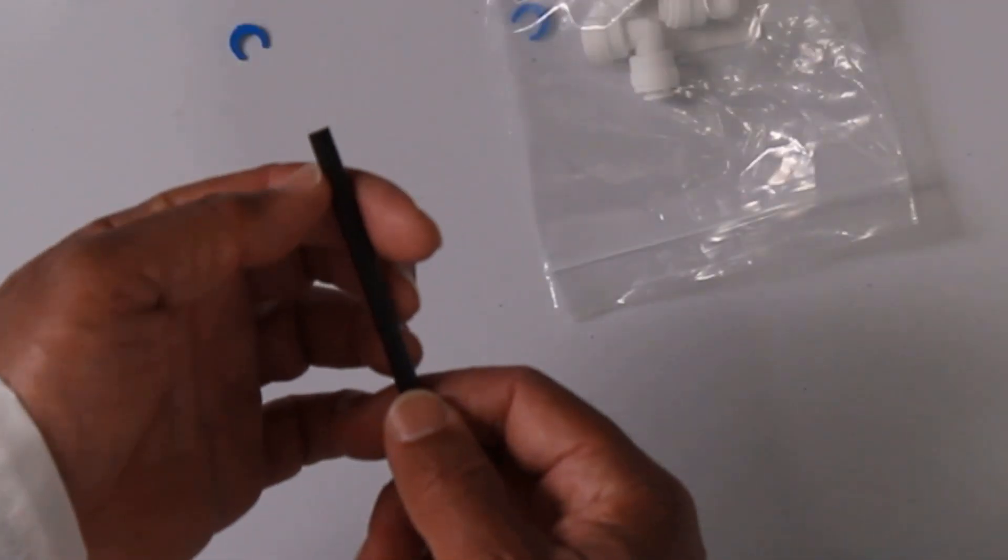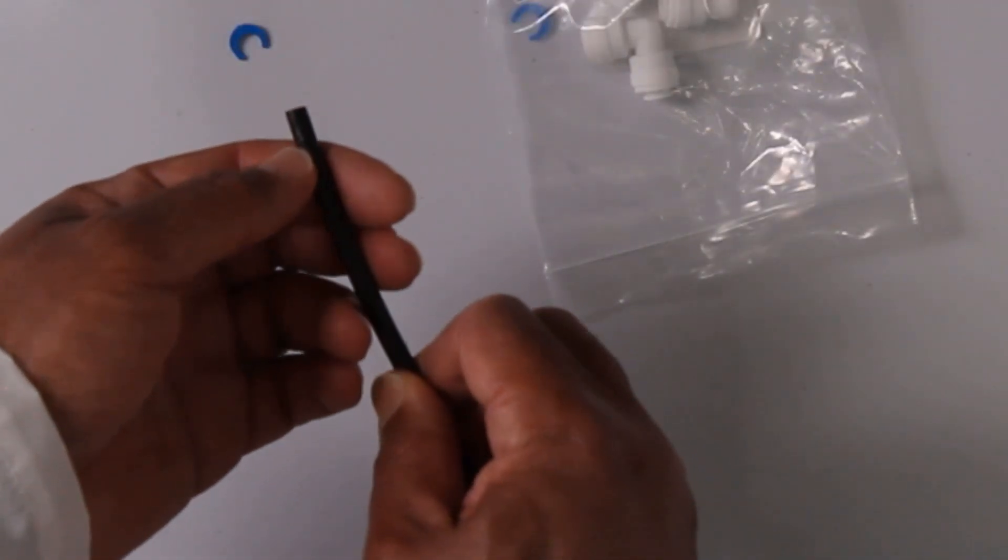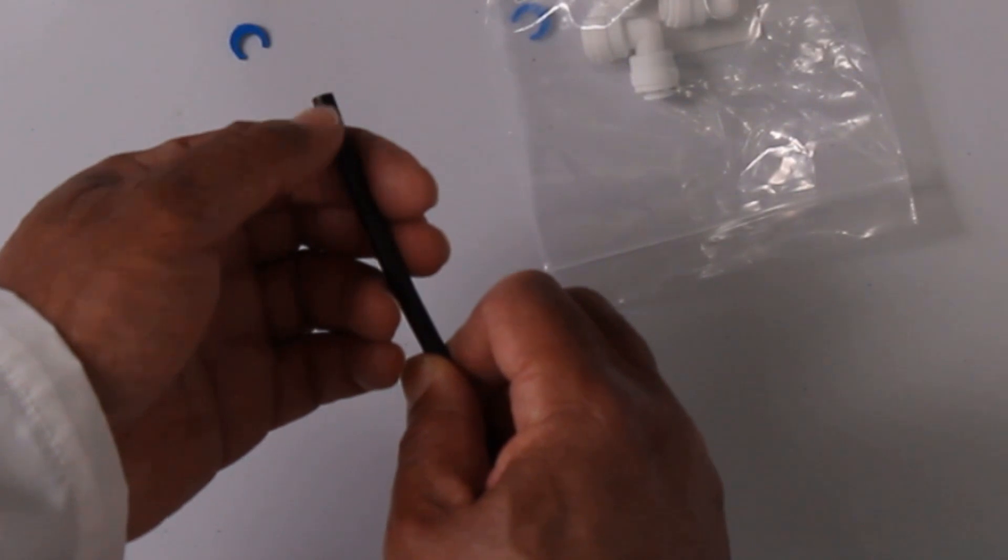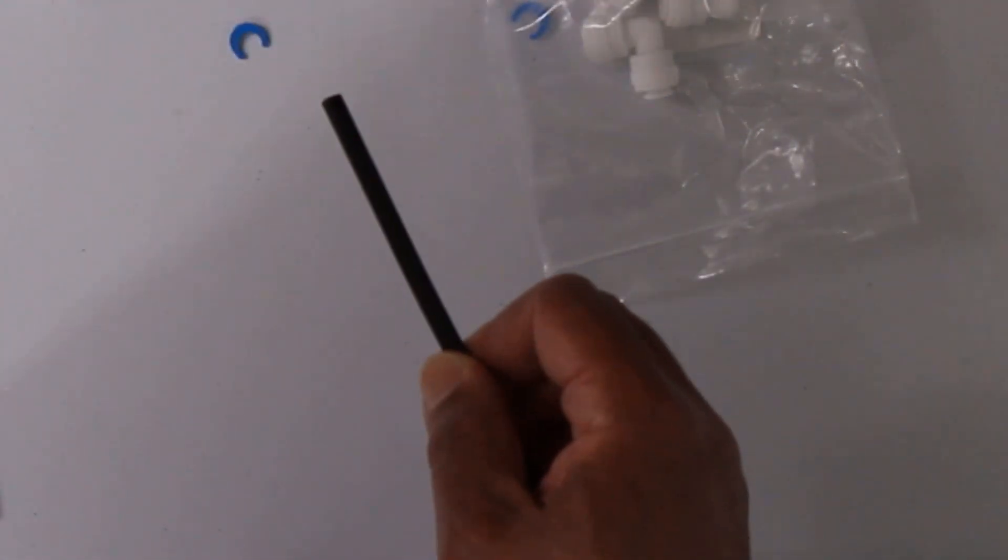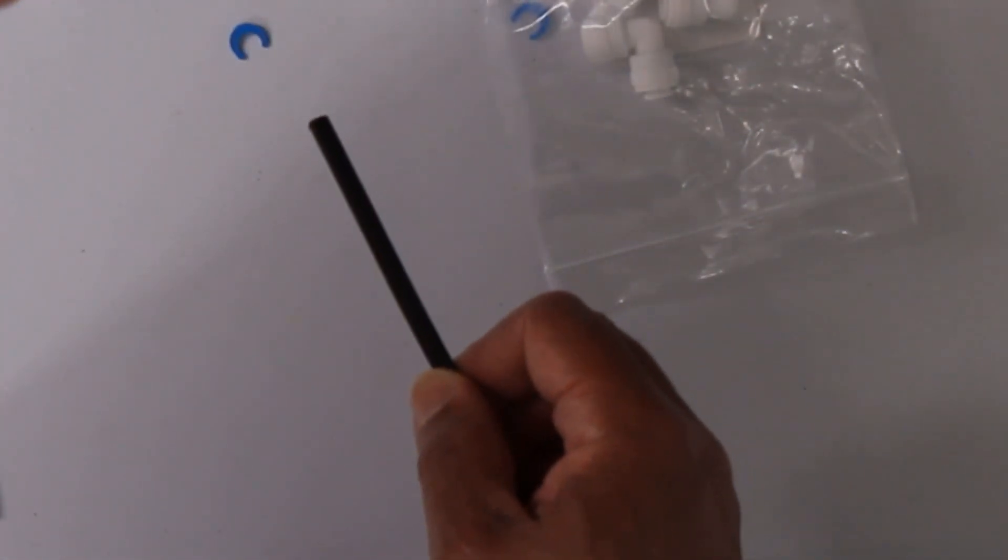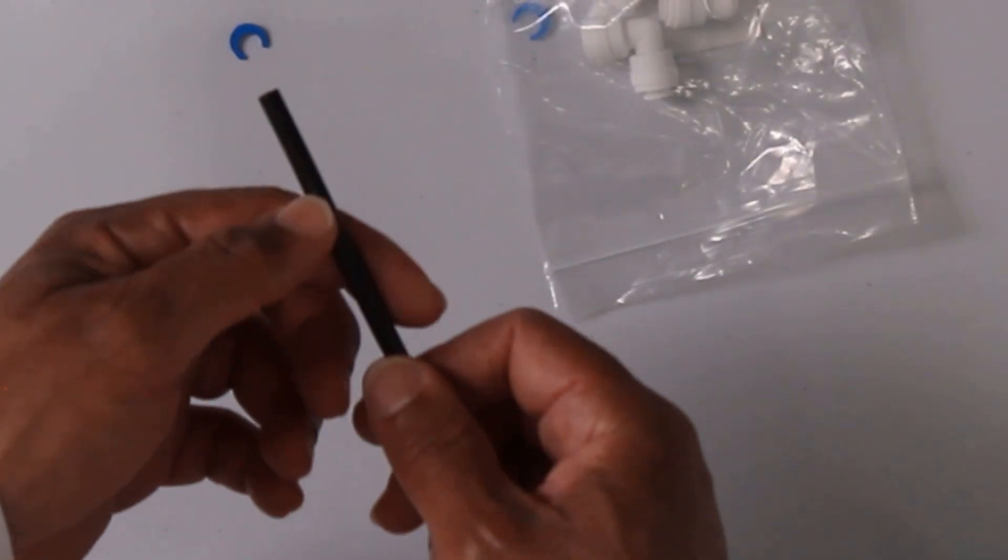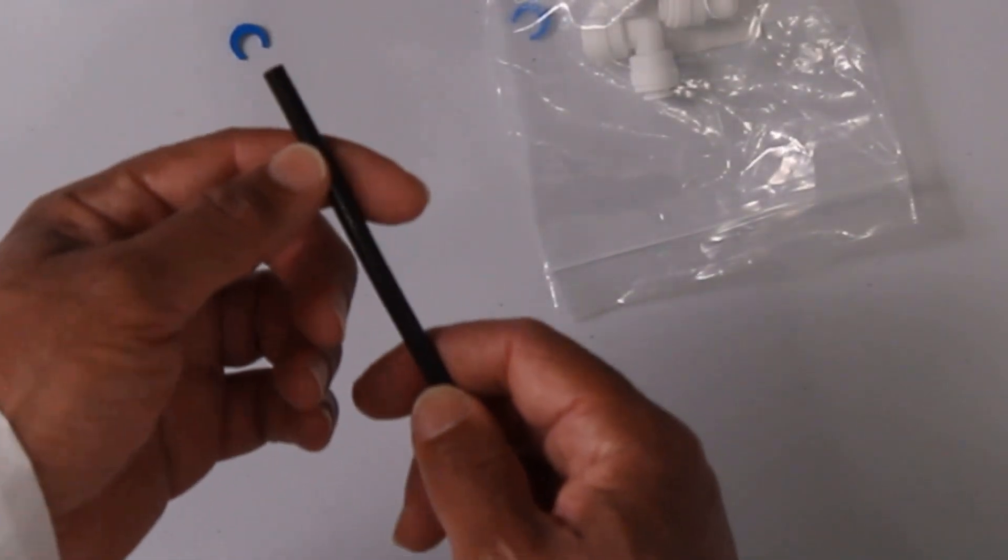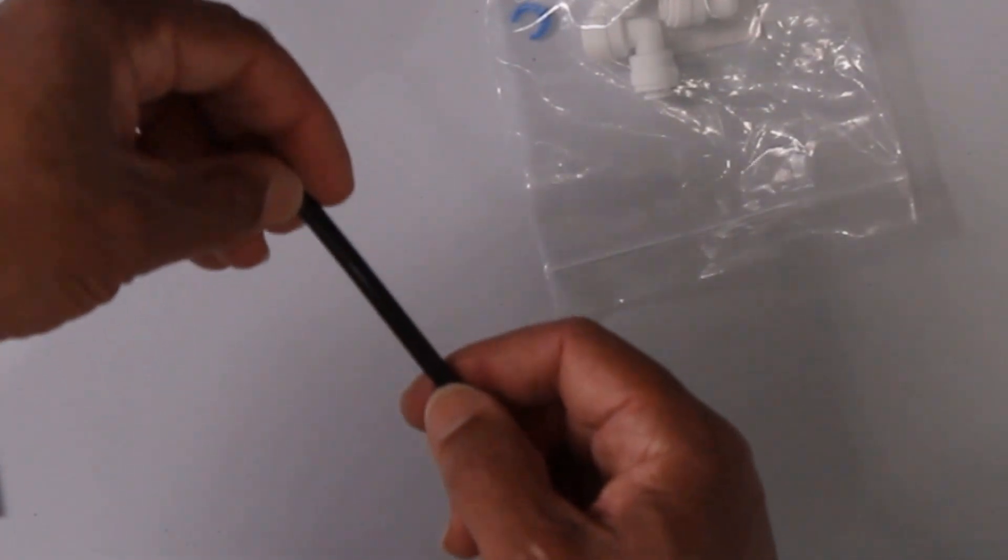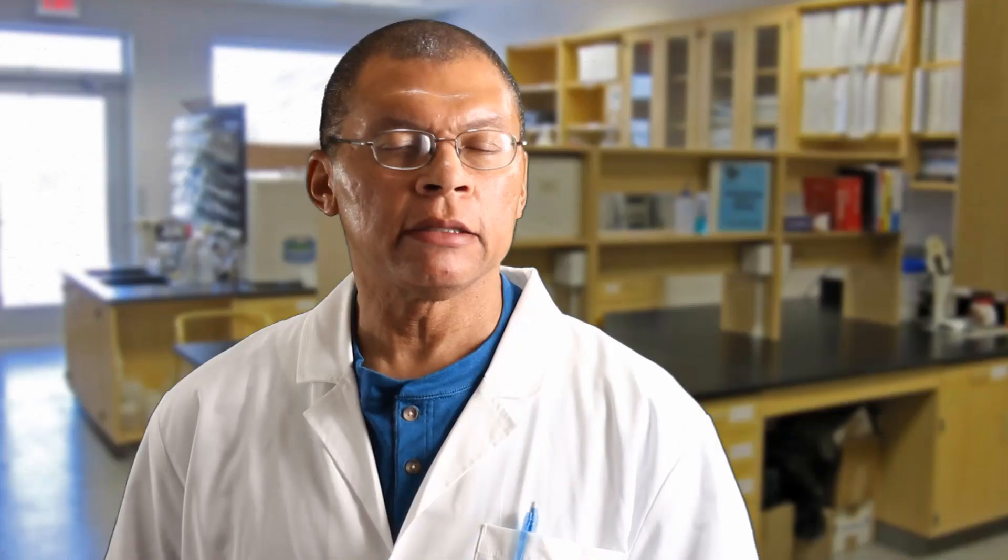Now, you will notice here at the end of the tubing, you can almost see the teeth mark, where it's kind of rough. That's where the collet bit down, holding the tubing into the fitting. After using this multiple times, the end of the tubing will be too rough, not smooth enough for the o-ring inside to create a watertight seal.